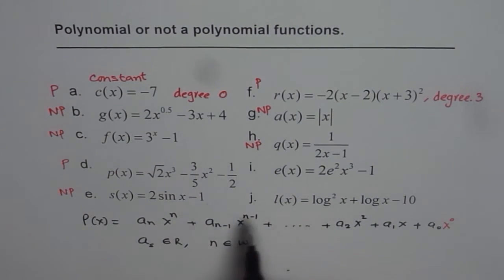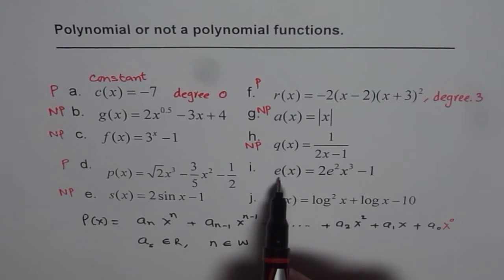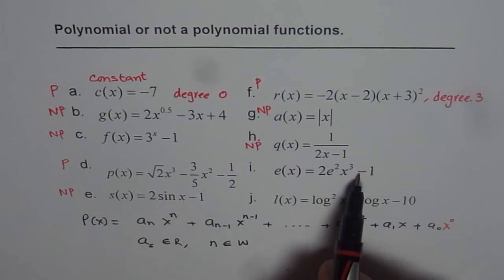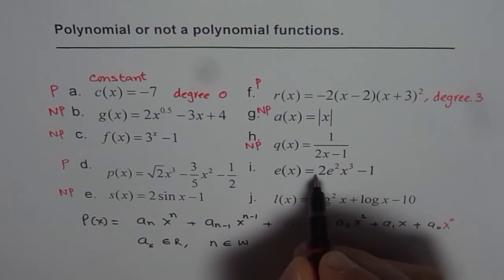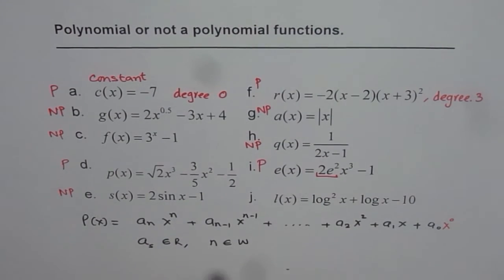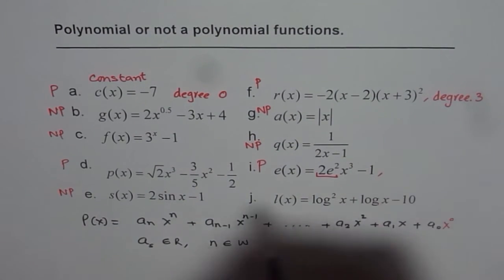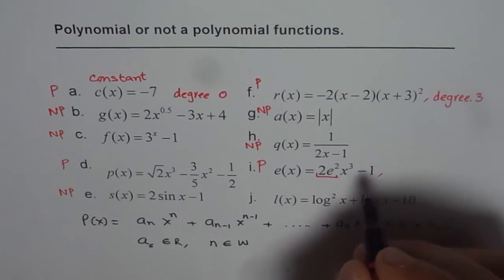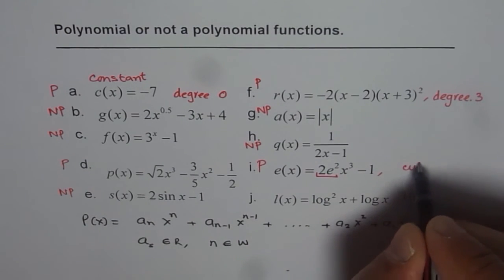Now remember, in polynomials we have smooth curves, no corners or cusps or asymptotes. Then we have e of x equals to 2e squared x cubed minus 1. Now that is kind of tricky. You will see 2e squared is like a coefficient of x cubed. It is like a coefficient, and that is a real number. So therefore, this is a polynomial. And in addition to writing polynomial, I am also mentioning the degree. The degree of this polynomial is 3. It is a cubic polynomial.